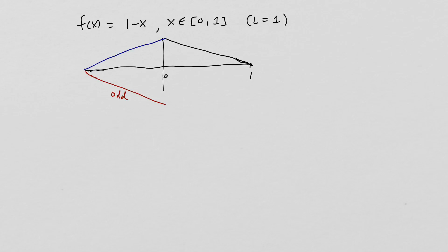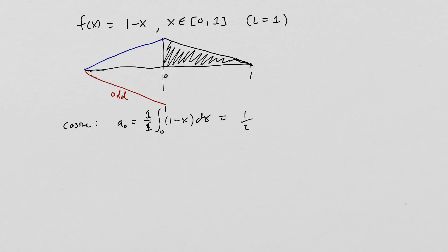Let's do the cosine series first. For a_0 it's going to be one over L, and since L = 1, it's one over one times the integral from 0 to 1 of (1 - x) dx. We already know that's going to be one half, because it's simply the area under the curve of this triangle — one half base times height.